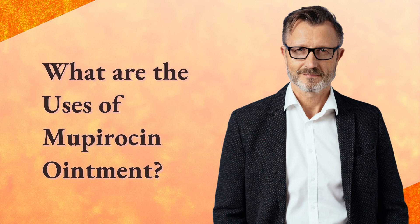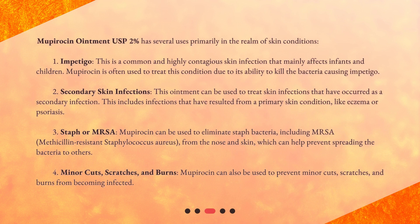What are the uses of Mupirocin Ointment? Mupirocin Ointment USP-2% has several uses, primarily in the realm of skin conditions. First, Impetigo — this is a common and highly contagious skin infection that mainly affects infants and children. Mupirocin is often used to treat this condition due to its ability to kill the bacteria causing impetigo.